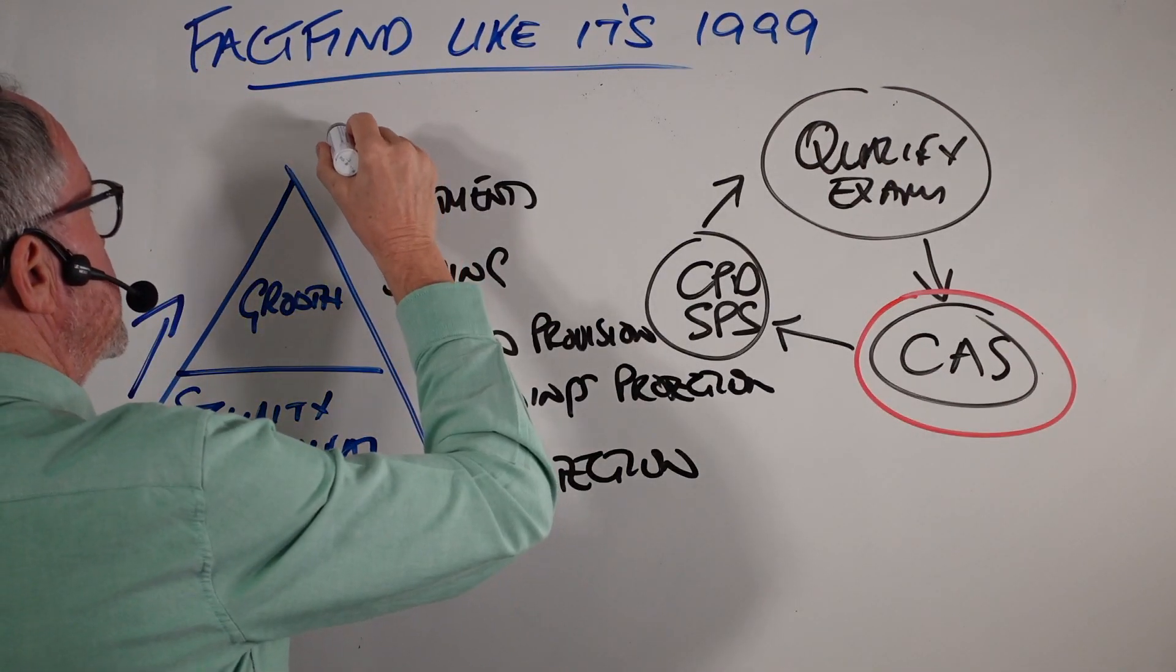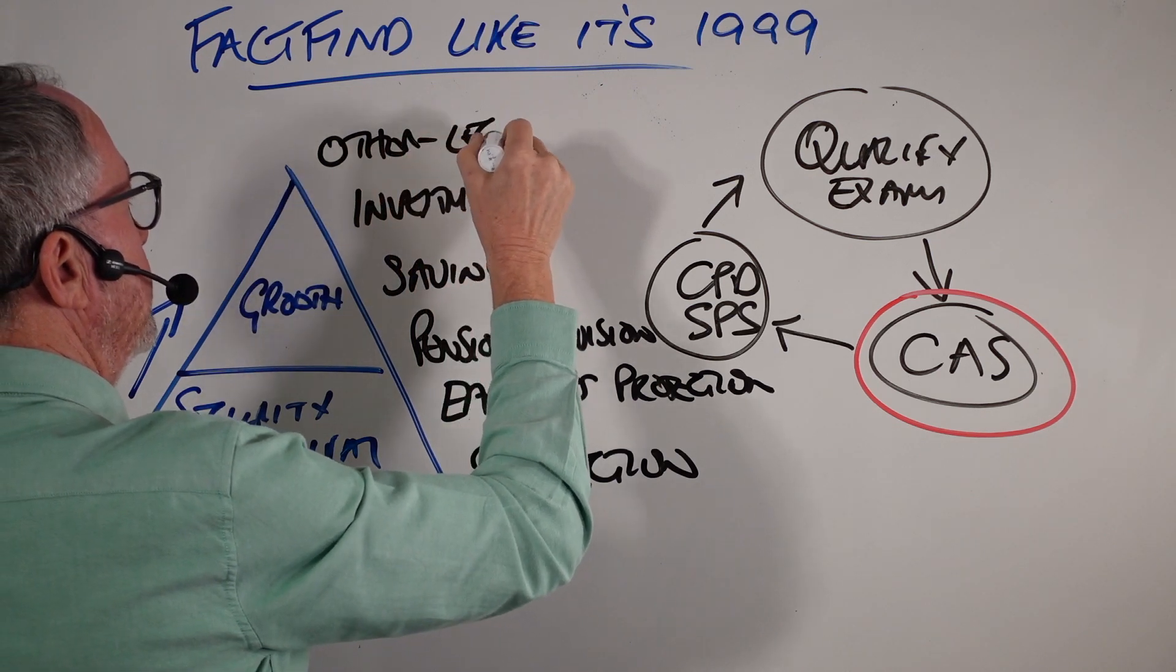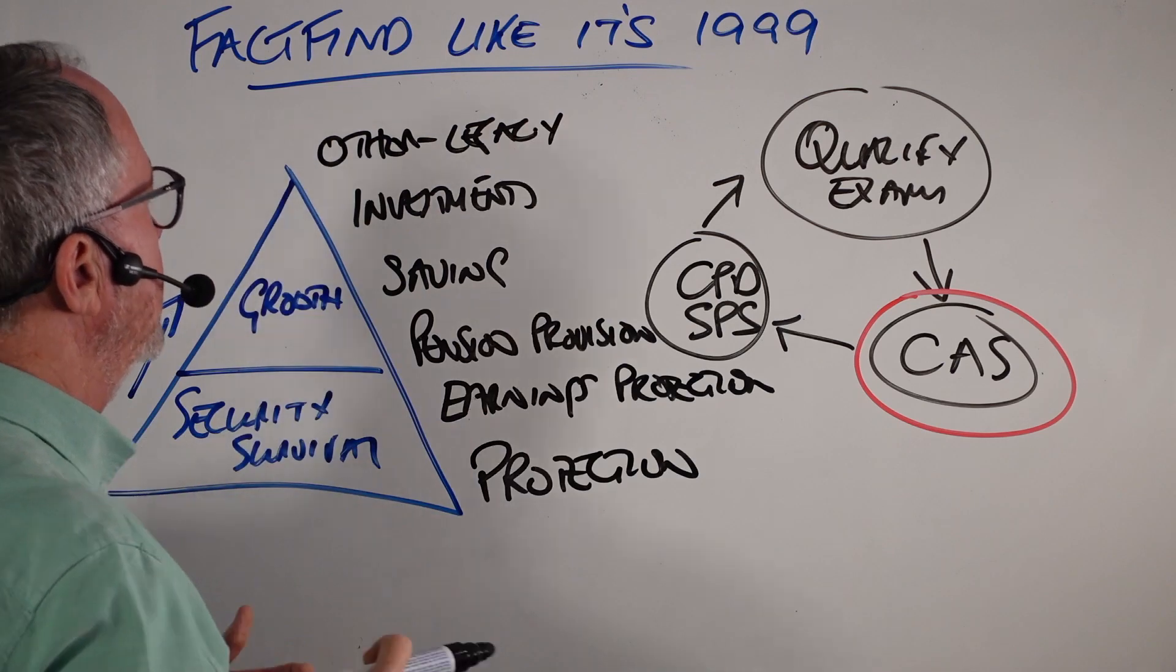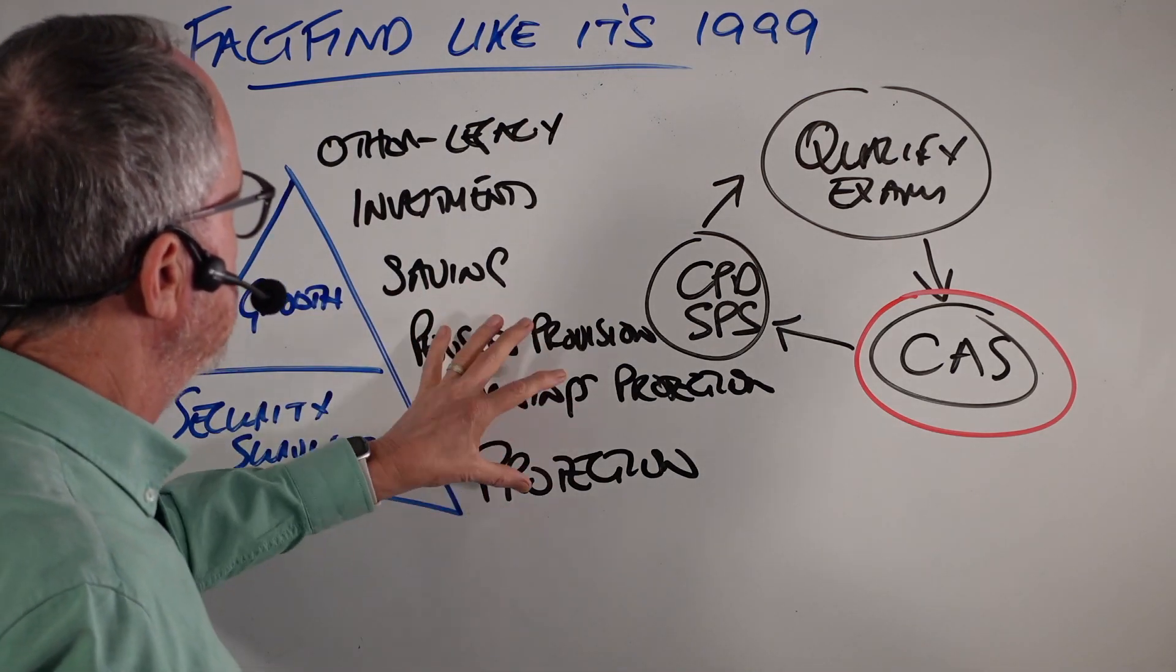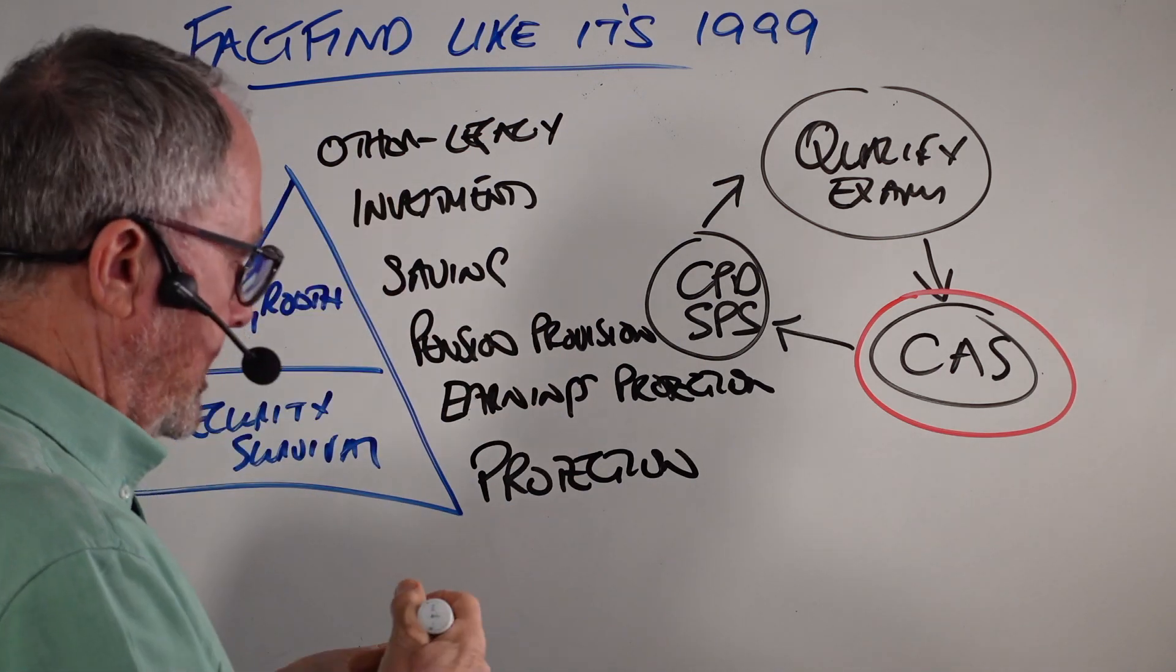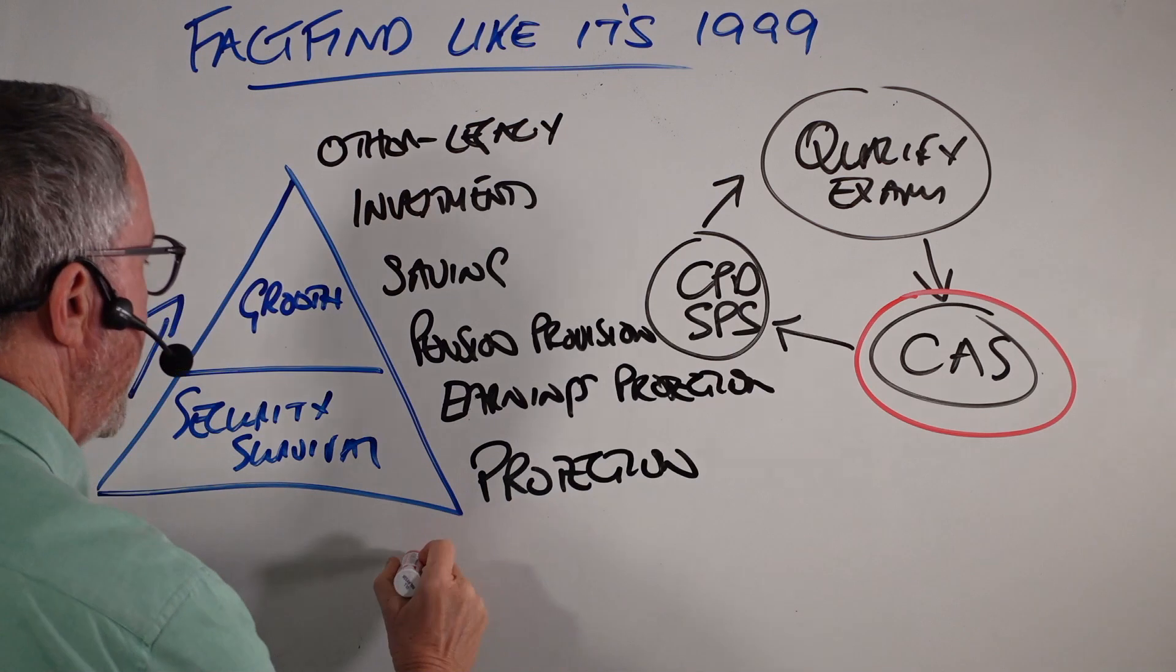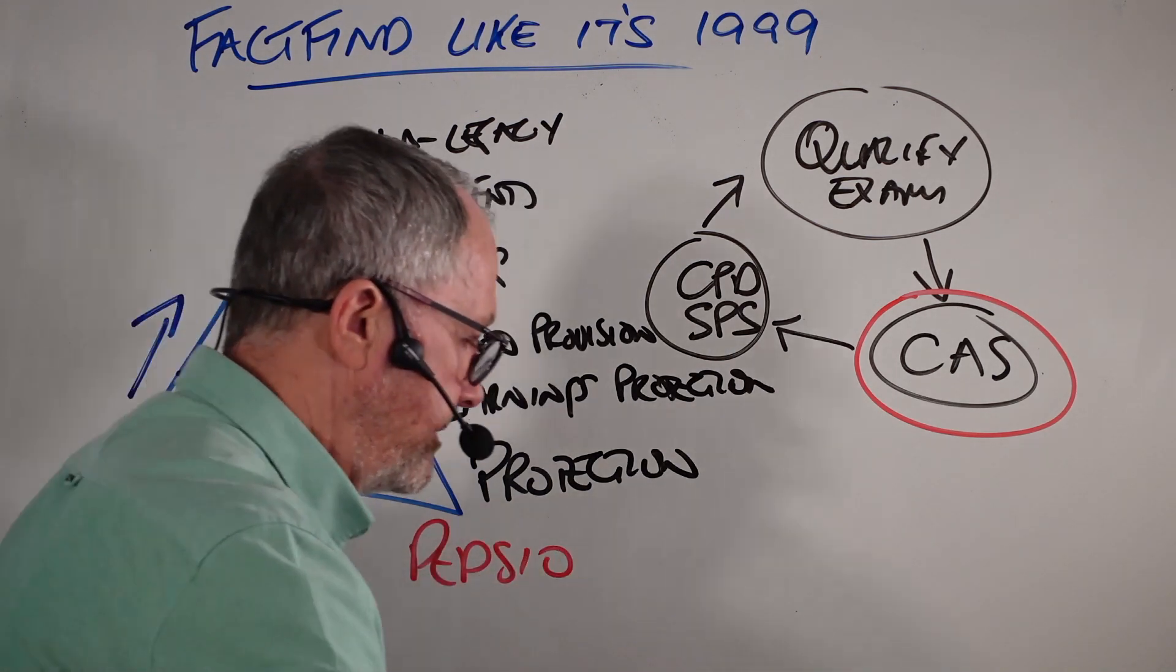Then we tend to look at other areas like legacy - I call it Other. You might want to look at how you're going to pass your legacy on to your next of kin, your wills, that sort of thing. Property purchase comes down here mostly but it could go up there as well. What you've got there is what we call PEPSIO. PEPSIO is our acronym.